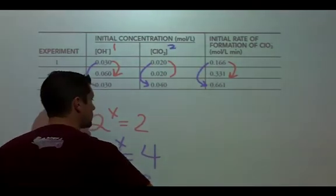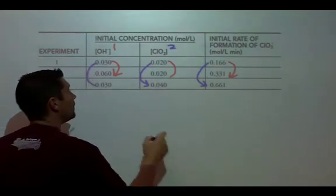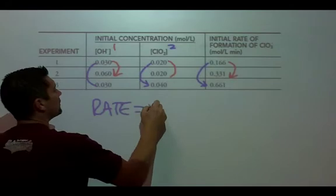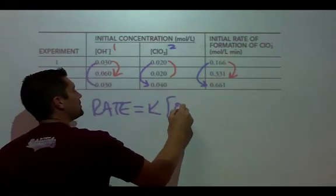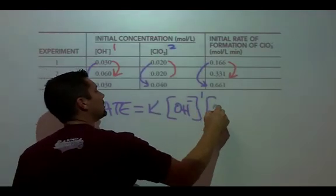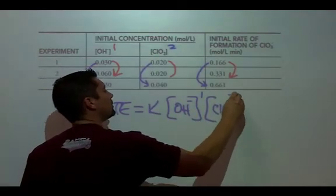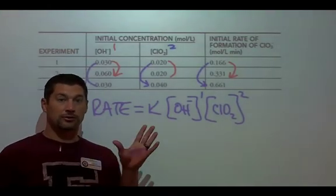So the rate law for this is going to be rate equals K, some sort of constant, hydroxide to the first, ClO2 to the second. Now you have to solve for the value of K.